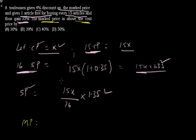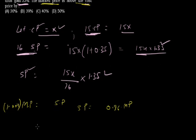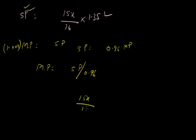Now, the discount is 4%, which means selling price = market price × (1 − 0.04) = 0.96 × MP. Therefore market price = selling price / 0.96. Substituting the selling price of one article: MP = (15X × 1.35) / (16 × 0.96).